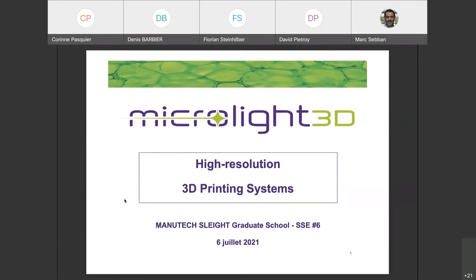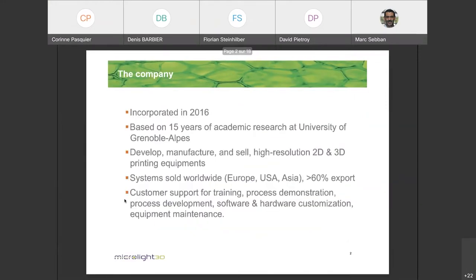Microlide 3D is a company that is five years old now. The technology that we call two photon polymerization that I will explain you in a moment is based on 15 years of research at the University of Greenewald. The company itself develop and manufacture and sell 2D and 3D high resolution printers.